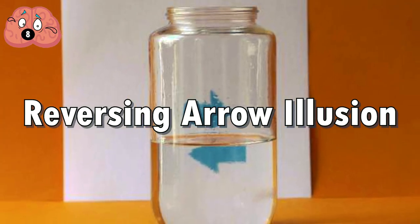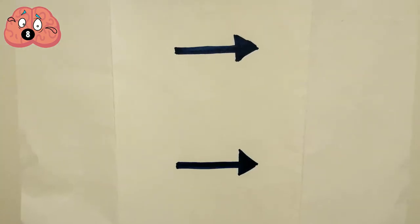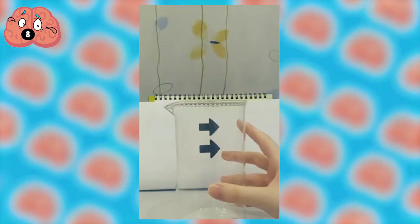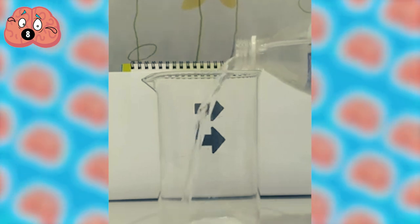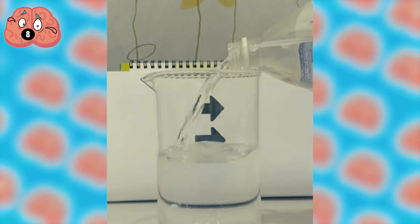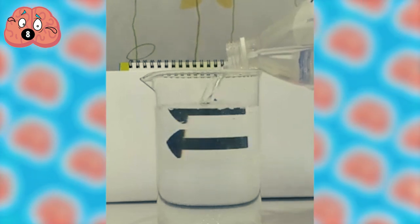Number 8. Reversing Arrow Illusion. For this trick, prepare a clear empty glass, a piece of cardboard with two arrows pointing in the same direction, and some water. Place the empty glass in front of the cardboard in such a way that you're still able to see the arrows through the glass. Now, slowly pour water into the glass and watch as the arrows change direction. You've just witnessed the reversing arrow illusion.